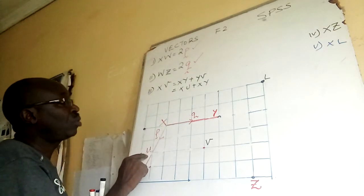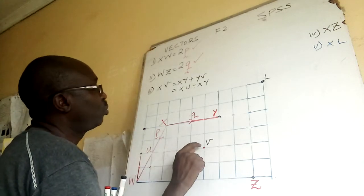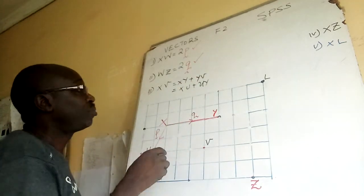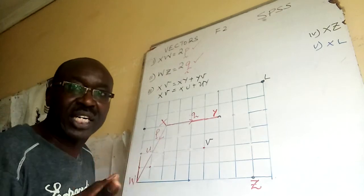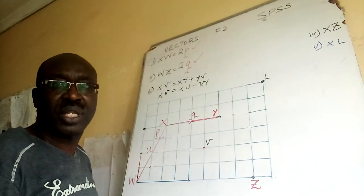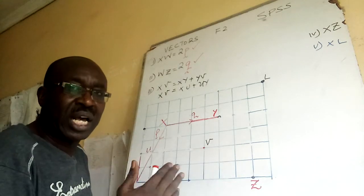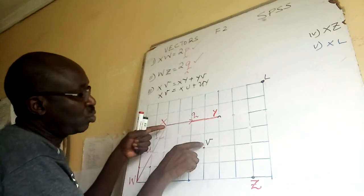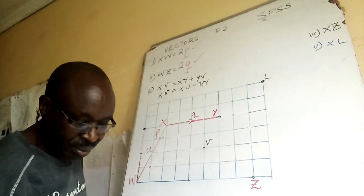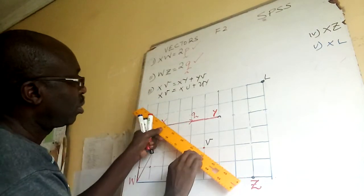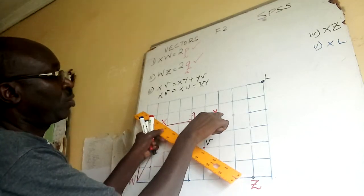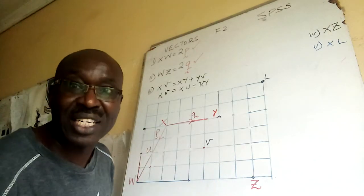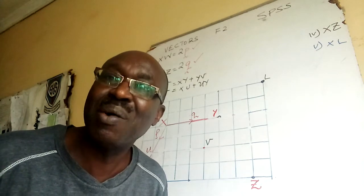And then we can also have XU plus UY, plus UV. So this is still XV. Meaning that I have two options — that's what I want it to come from you. Not all students will take one route. So from X to V, I can use that route and then this one.